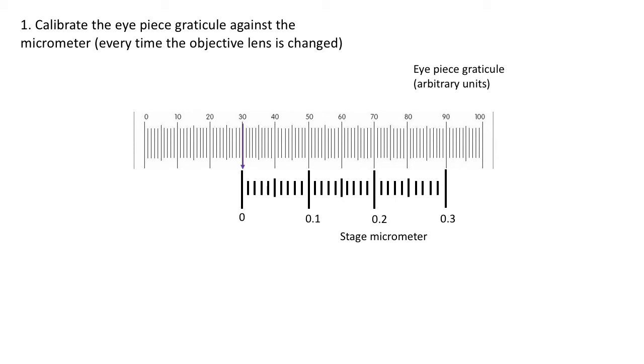Here, 0 is positioned at 30 on the eyepiece graticule and 0.1 is positioned at 50. We know that from 0 to 0.1 is equal to 100 micrometers or 0.1 millimeters. That must mean that from 30 to 50, those 20 divisions must also be equal to 0.1 millimeters or 100 micrometers. Now you can work out what one division is of the eyepiece graticule - you simply divide 100 by 20.